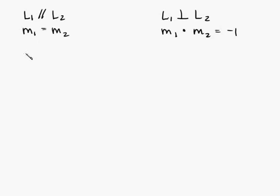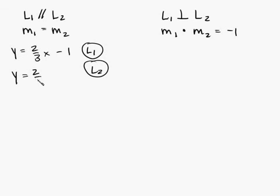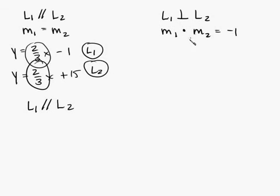So here's an example. Let's say the slope of this equation, y equals 2 thirds x minus 1, and this would be called line 1. And let's say for line 2, you have y equals 2 thirds x plus 15. Well, since both this slope and this slope are equal, then we say that line 1 is parallel to line 2.